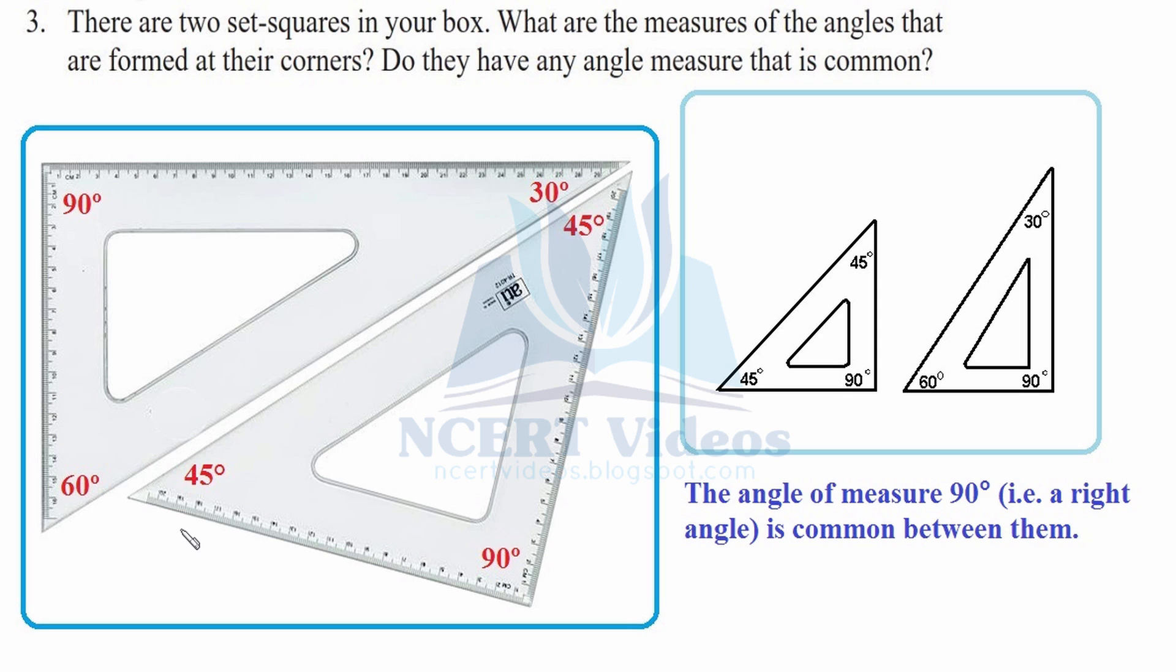These are the set squares you can see in your metric box. There are two types: one is 30-60-90 degrees and another is 45-45-90 degrees. You can see that 90 is common in both angles. When you place them in similar orientation at 90 degrees, both have 90 degrees in common. The rest of the angles are not common. Therefore, the angle of measure 90 degrees - the right angle - is common between them. That was your answer for question three.